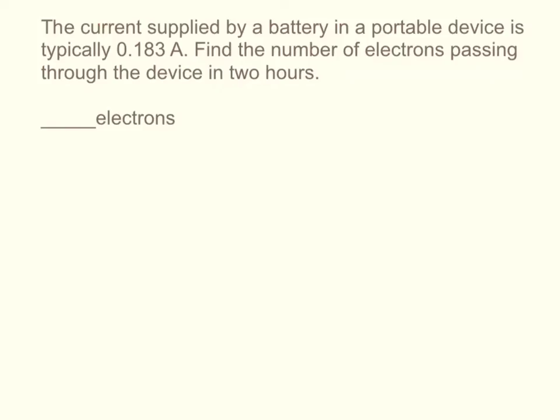This question says the current supplied by a battery in a portable device is typically 0.183 amps. Find the number of electrons passing through the device in two hours.